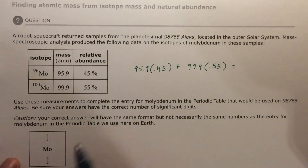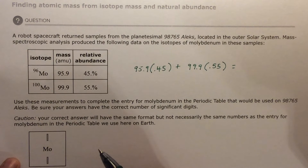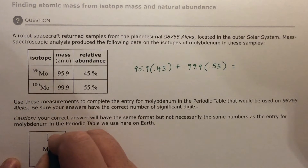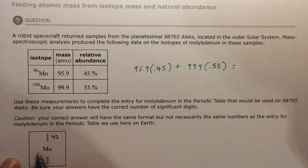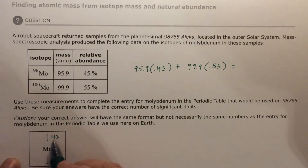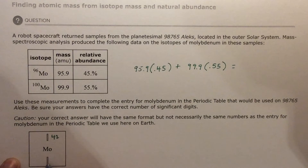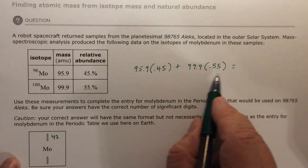Now, since this is all made up and something out in the solar system — regular molybdenum is element 42 on the periodic table. The atomic number is always above. On our periodic tables it's in the upper right corner, but normally here's the symbol, above is the atomic number, and below would be the mass number. So here is 42 because it's molybdenum. All molybdenum is 42. This is atomic number 42, and here's the mass number, which is what we're going to add together.